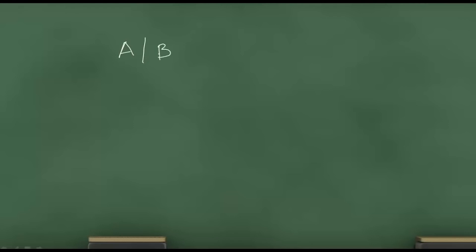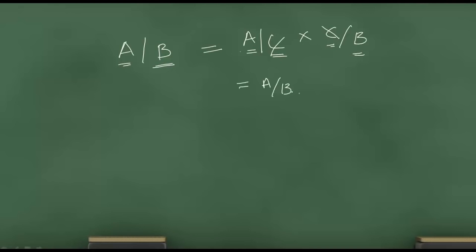To put it mathematically: say you want the exchange rate for currency A per B — that is, you want to purchase currency B and pay in currency A. You can find this if you have the exchange rate for A/C and the exchange rate for C/B. By taking the product of these two, C in the denominator and C in the numerator cancel out, and you get A/B. That is why the product of two exchange rates can derive another exchange rate.